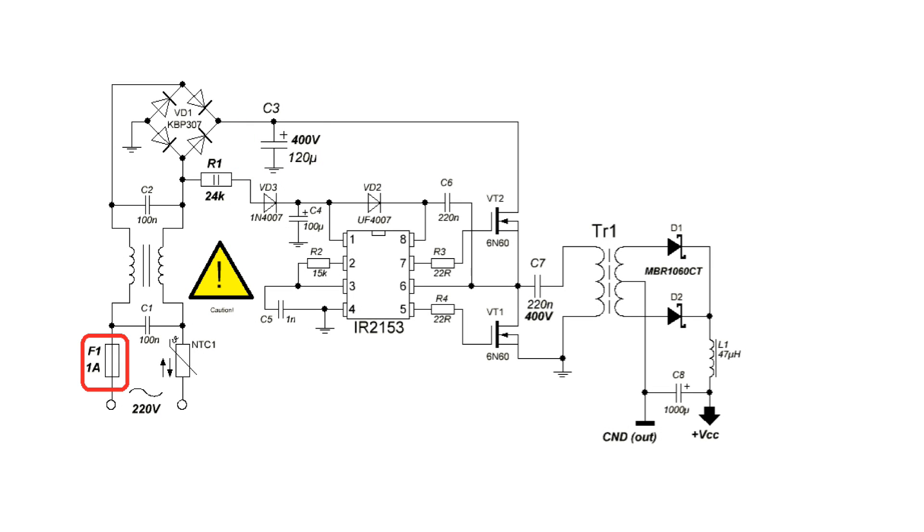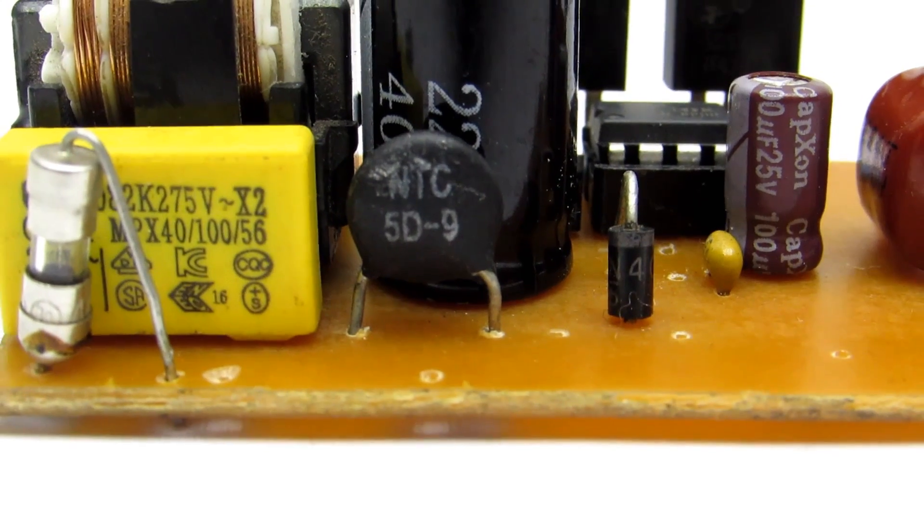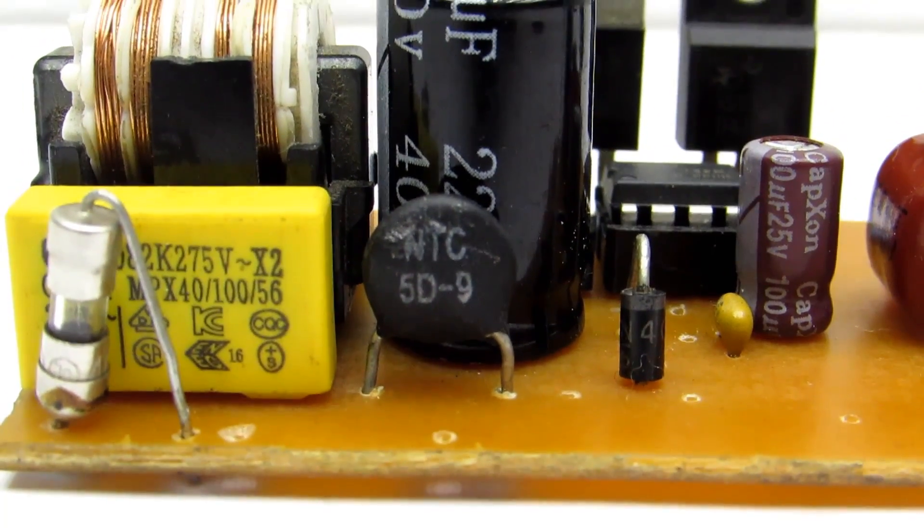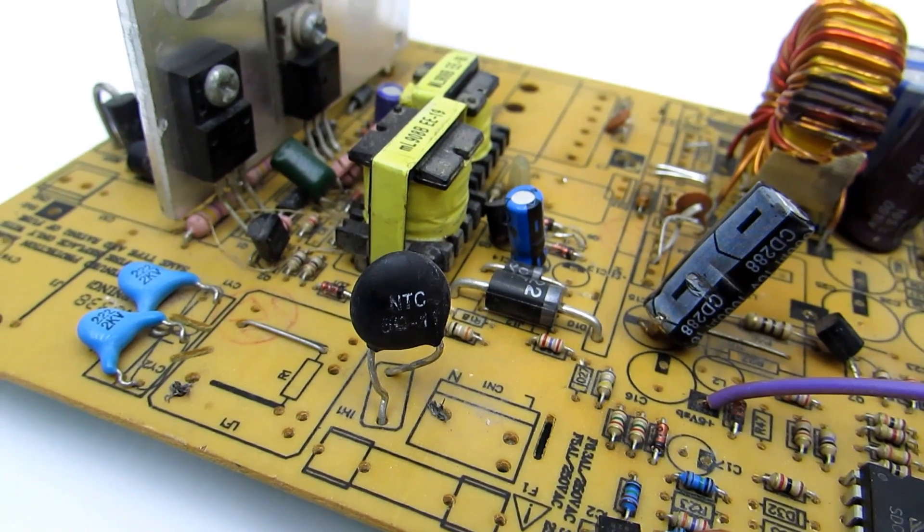At the input are the fuse F1 and the thermistor. The thermistor is for current decrease at the moment of switching on the unit to AC network. Its resistance is about 3.5 ohms at room temperature. Such a thermistor can be found on the motherboard of a computer power supply. Its parameters aren't critical, you can use any similar.